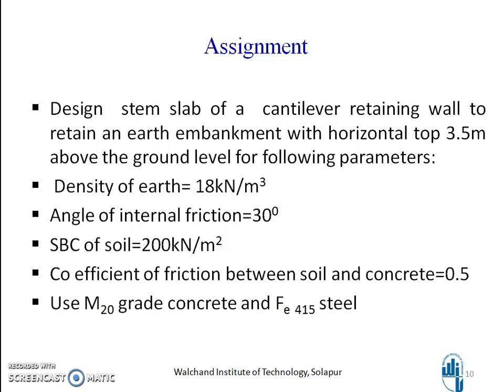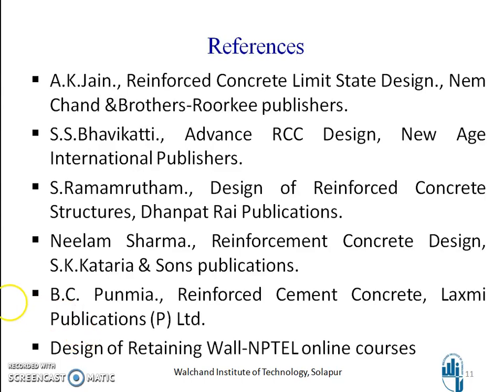Assignment: Design the stem slab of a cantilever retaining wall to retain an earth embankment with horizontal top 3.5 m above ground level. Parameters: density of earth = 18 kN/m³, angle of internal friction = 30°, SBC of soil = 200 kN/m², coefficient of friction between soil and concrete = 0.5. Use M20 grade concrete and FE415 steel. References used for preparation of this session are also provided.